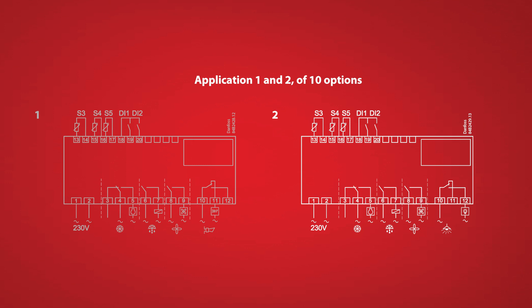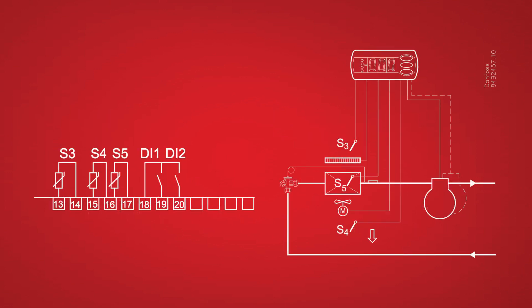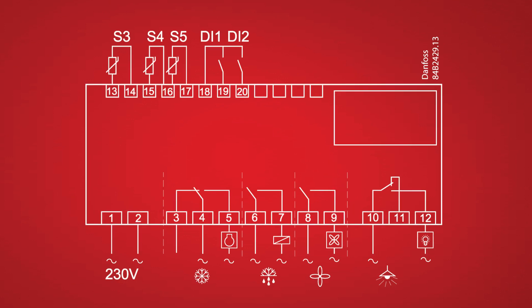For the sensors, the S3 sensor which is the return air will be wired to 13 and 14, the S4 supply air will be wired to 15 and 16, and the S5 defrost termination sensor will be wired to 16 and 17. All sensors are typically a PT1000 which is a resistance temperature sensor that is not polarity specific.